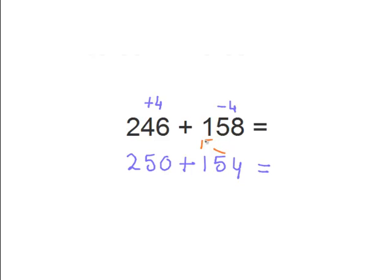So if this is still too difficult, we can break it up even further. So now we can break it up to 150 and 4. So now we add 250 plus 150. We know that equals 400.